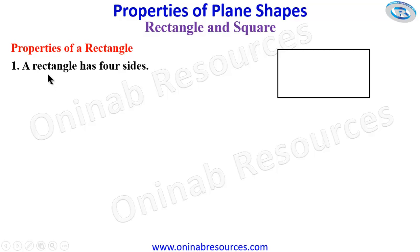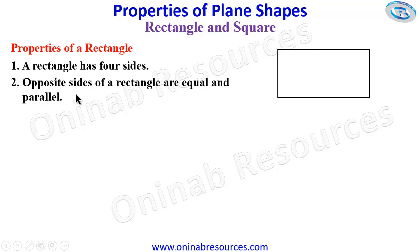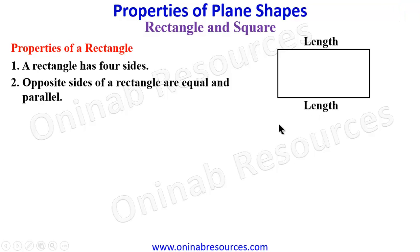The first property is the rectangle has four sides — that's what makes it a quadrilateral. Then the next thing is opposite sides of a rectangle are equal and parallel. These two sides are opposites and they represent the length, while these also opposite sides represent the breadth.